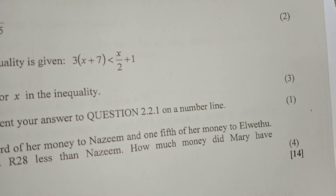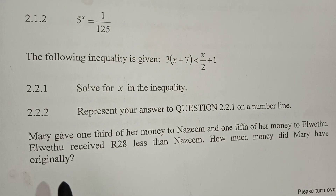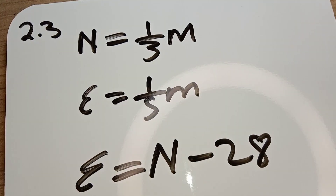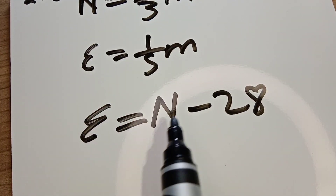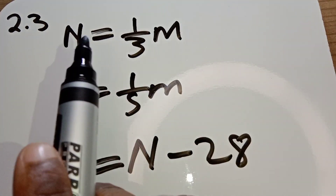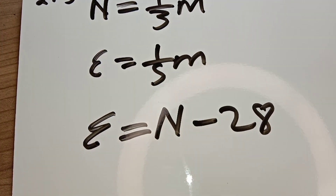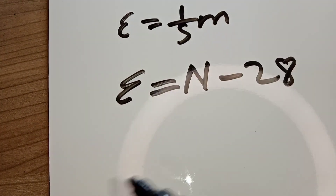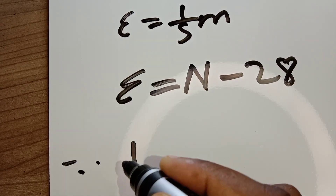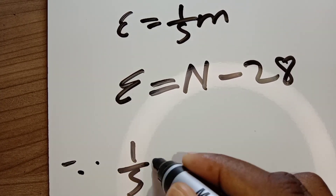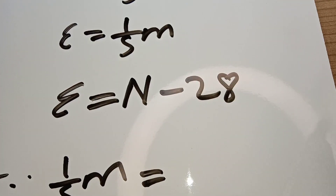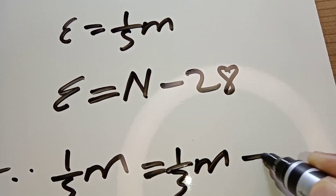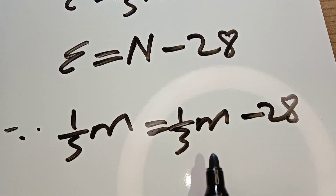The question asks: how much money did Mary have originally? We need to find M. We know L2 is having one over five of Mary's money, and Nazeem is having one over three of Mary's money. So we substitute: one over five M equals one over three M minus 28.